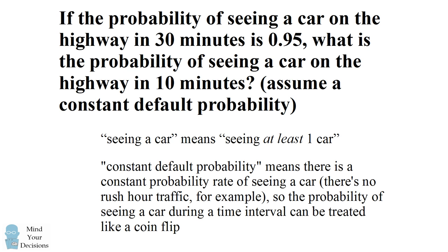The assumption of a constant default probability means there's a constant probability rate of seeing a car. For example, there's no rush hour traffic during one of the intervals. This means the probability of seeing a car during a time interval can be treated like a coin flip.